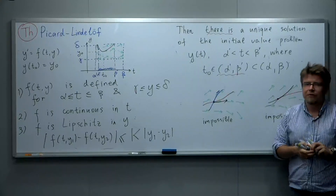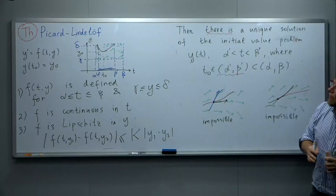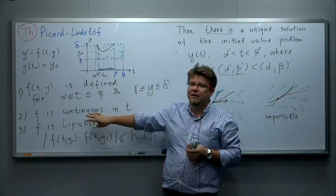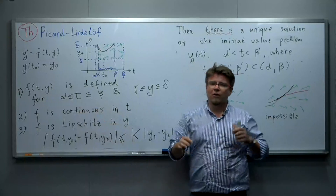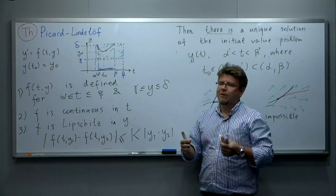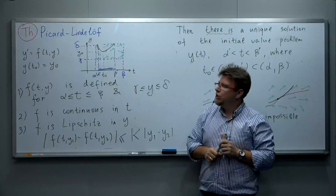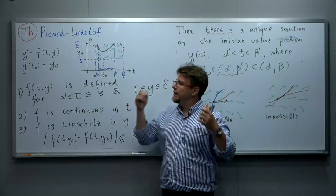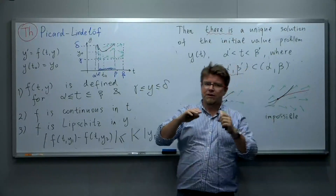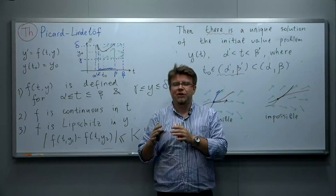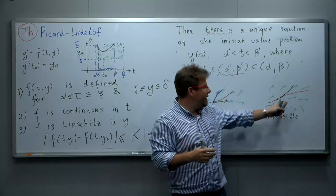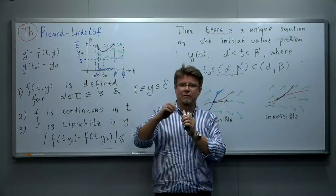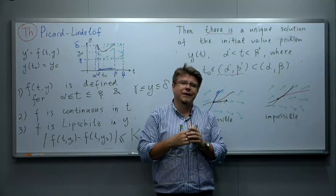In other words, if we have an ordinary differential equation whose right-hand side satisfies these conditions — or the simpler but more restrictive condition that it is continuously differentiable in both t and y — then solutions of the differential equation are always disjoint. They cannot intersect and they cannot even have a common point at which they are tangent to each other. If you plot two solutions, they do not intersect at all.